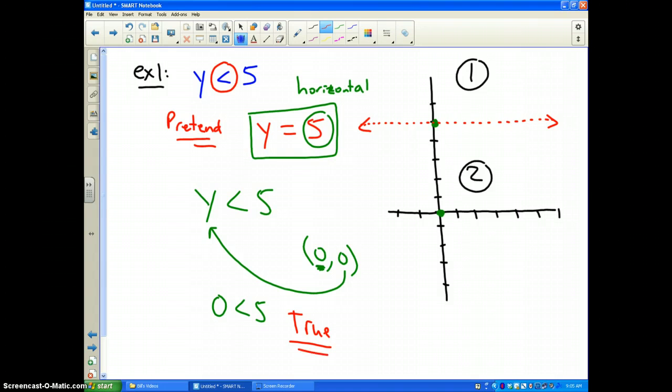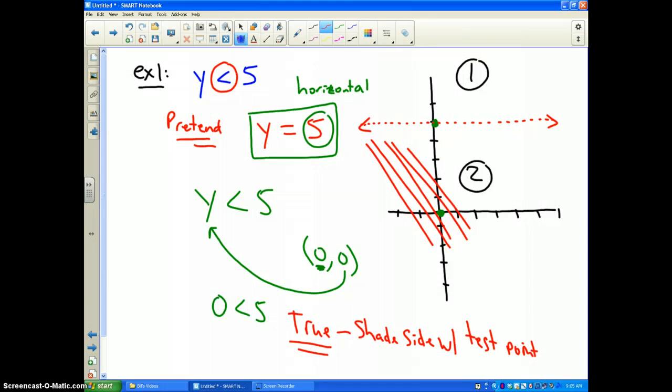So, therefore, since it's true, we shade the side with our test point because all those coordinates will work. So, I'm just going to draw a number of lines. And for those of you that have colored pencils, colored pens, you can do some shading.